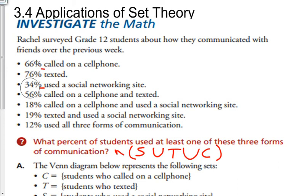66% called on a cell phone. 76% texted. 34% used a social networking site. 56% called and texted. 18% called and used social networking. 19% texted and used social networking. And 12% used all three forms of communication.